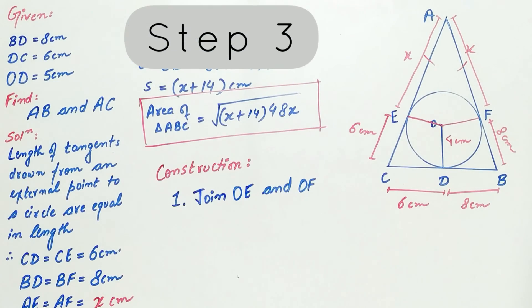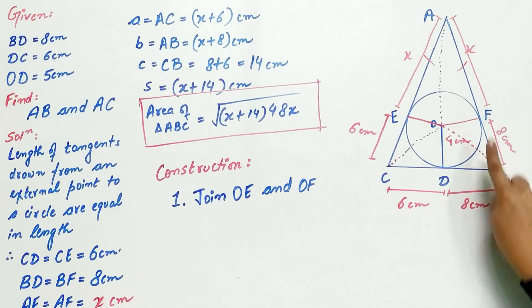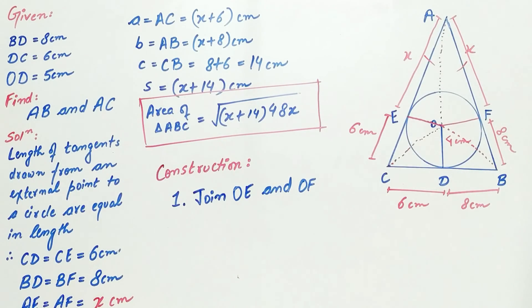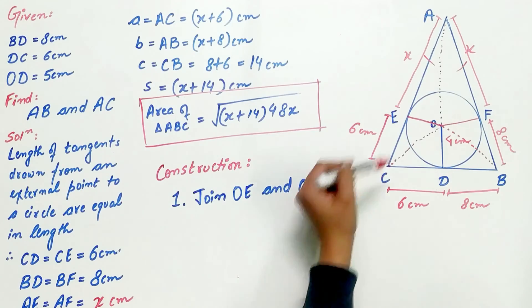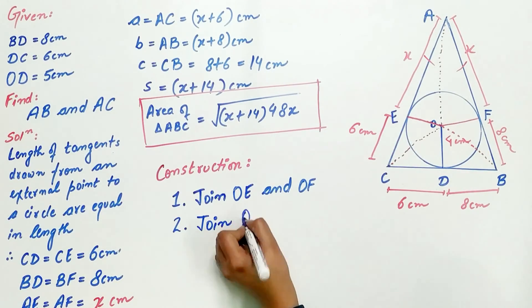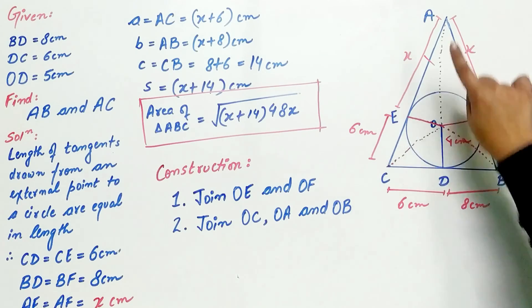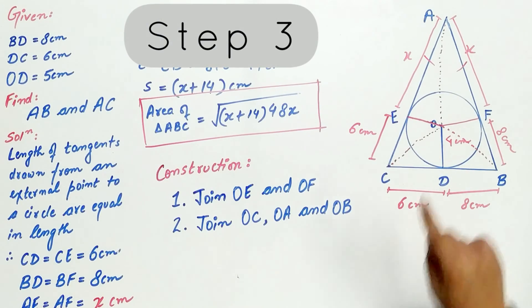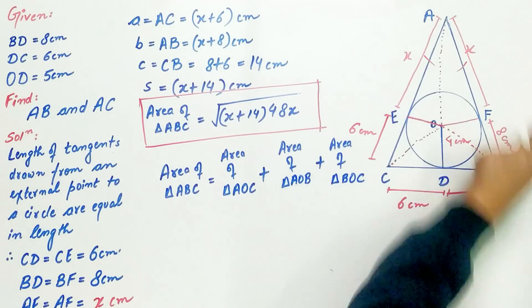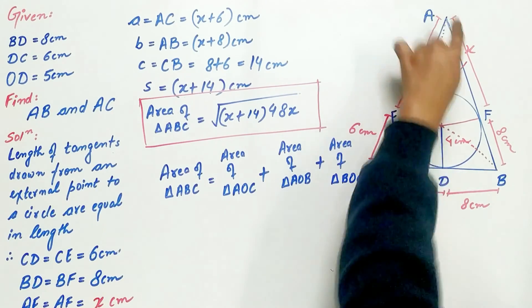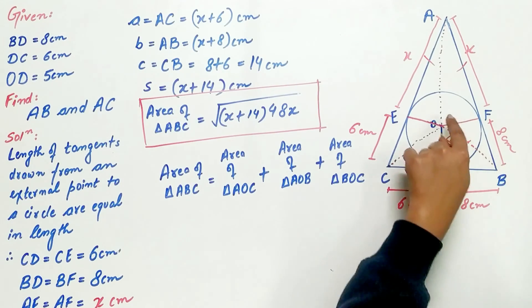Let's move to Step 3. We will join O to E and O to F with dotted lines, dividing the entire triangle ABC into three triangles: triangle BOC, triangle AOC, and triangle AOB. We join OC, OA, and OB. The area of triangle ABC equals the area of triangle AOC plus the area of triangle AOB plus the area of triangle BOC.